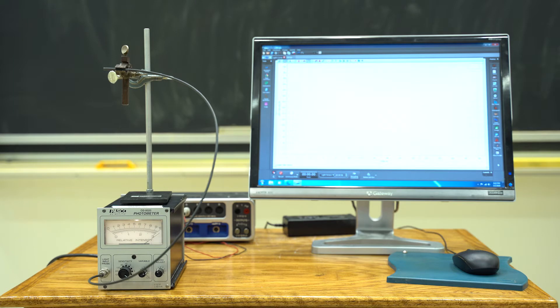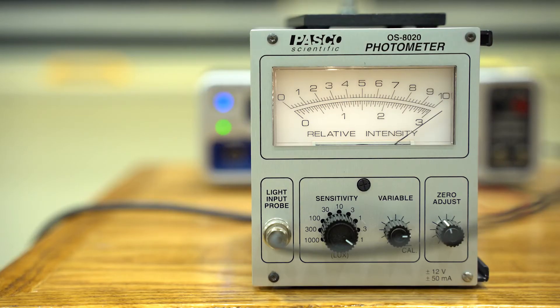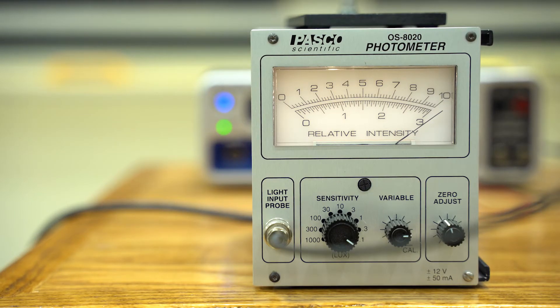A fiber optics cable points at the binary bulb system from a distance of about 10 feet. This cable feeds into a photometer which measures the incoming light intensity for the computer.